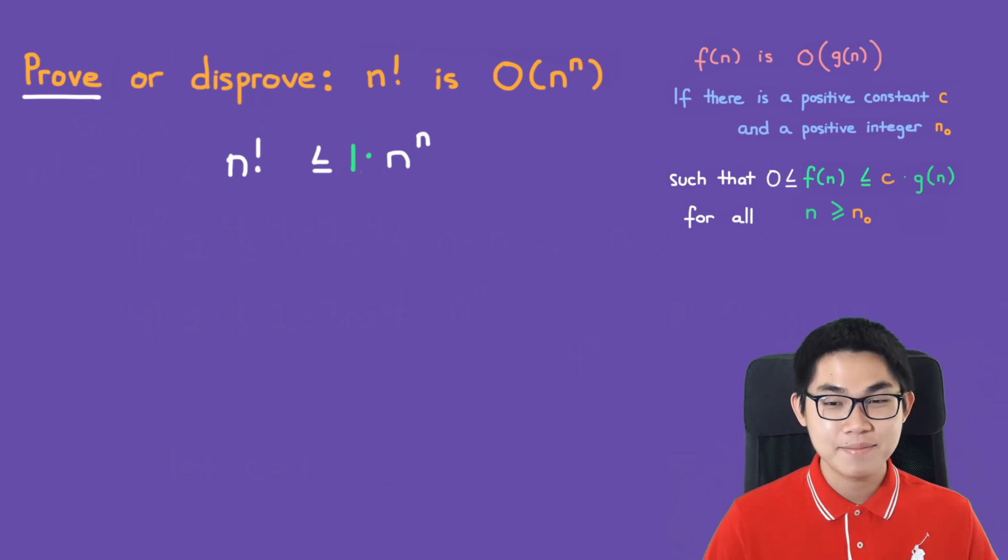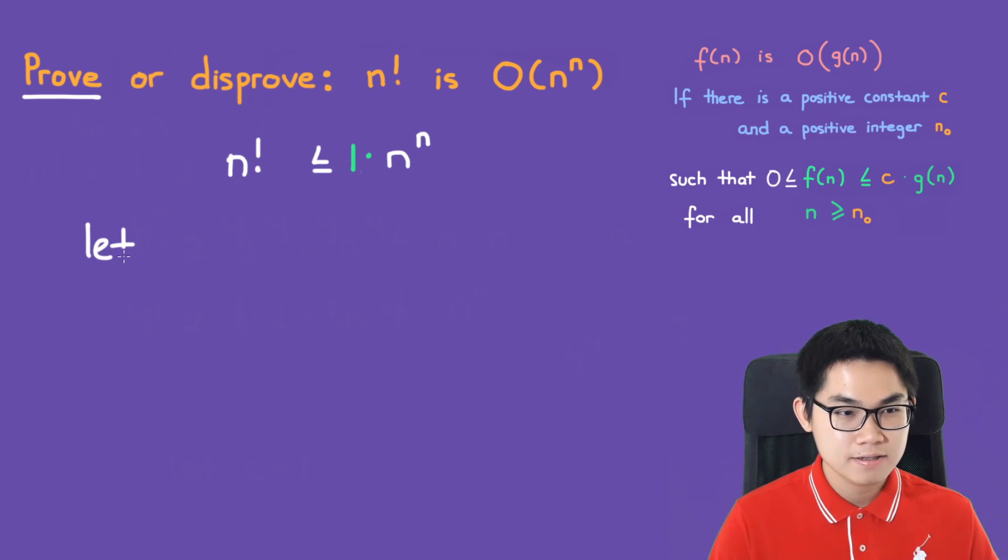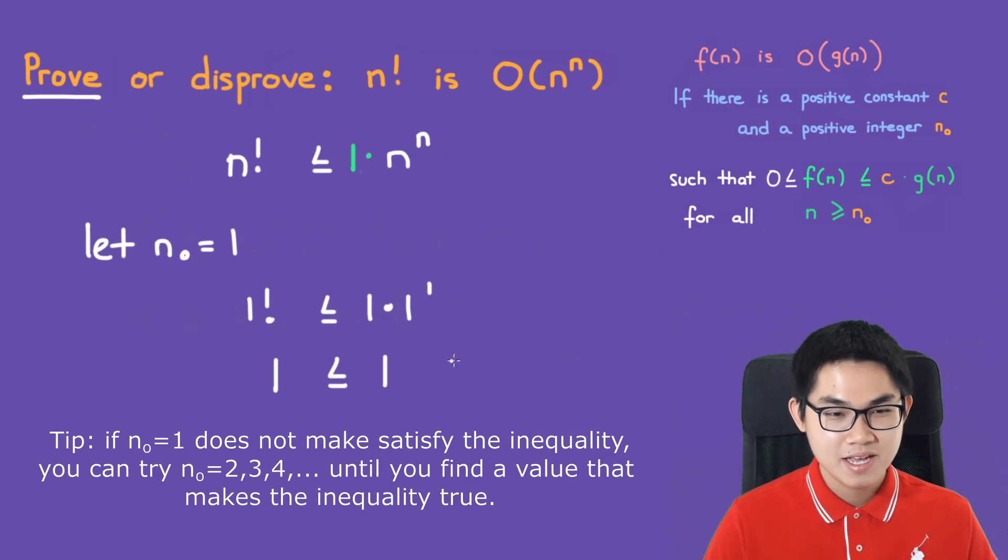The last step is to find an n naught. Basically, we find an n that makes this inequality true. We always start at 1, so let n naught equal to 1 and see if this inequality is true. On the left side, we have n factorial is less than or equal to 1 times 1 to the power of 1. So we have 1, which is indeed smaller or equal to 1. So we found an n naught that makes this inequality true.